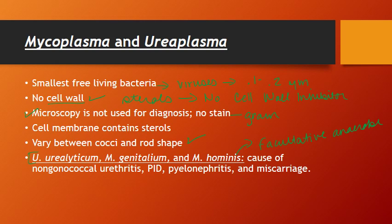With these three organisms — U. urealyticum, M. genitalium, and M. hominis — we are generally thinking about genitourinary tract infections. The genitourinary tract is colonized with both Mycoplasma and Ureaplasma, meaning that many women are asymptomatic carriers. Just because you identify these organisms in a patient sample doesn't mean they're necessarily causing disease. However, it is generally accepted that these three organisms can cause non-gonococcal urethritis, which is basically infection of the urethra that is not caused by Neisseria gonorrhoeae.